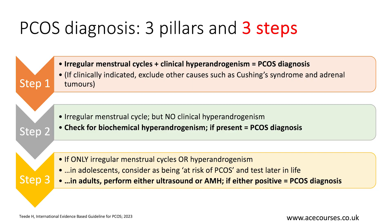Step 3 applies when you do not yet have a diagnosis — either you have irregular menstrual cycles but no hyperandrogenism, or you have hyperandrogenism but regular cycles. In other words, only one of the three pillars is present. In that case, you proceed to an ultrasound scan or an AMH test, and if the result is positive for polycystic ovarian morphology, you have a diagnosis of PCOS.